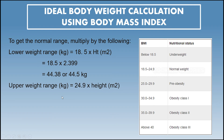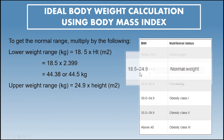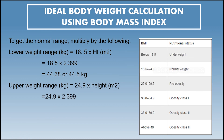Next, to get the upper weight range, we will multiply height in meters squared by 24.9. The value 24.9 is the upper limit in the BMI table to be considered normal weight. So 24.9 times 2.399 equals 59.73, or 60 kilograms.